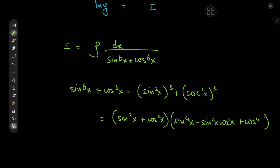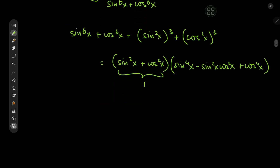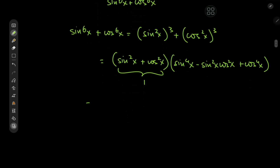This simplifies things considerably because sin²x + cos²x is just one, so we're only left with sin⁴x plus cos⁴x minus sin²x·cos²x.